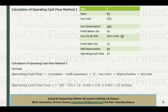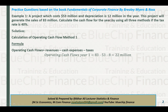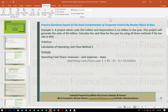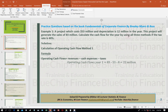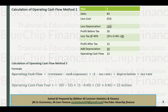So sales are 83 million, less cost 53 million, less depreciation 10 million. After subtracting these, profit before tax is 20 million. Applying 40% tax gives 8 million in tax. So 20 minus 8 gives profit after tax of 12 million. Add back depreciation of 10 million and your operating cash flow is 22 million.